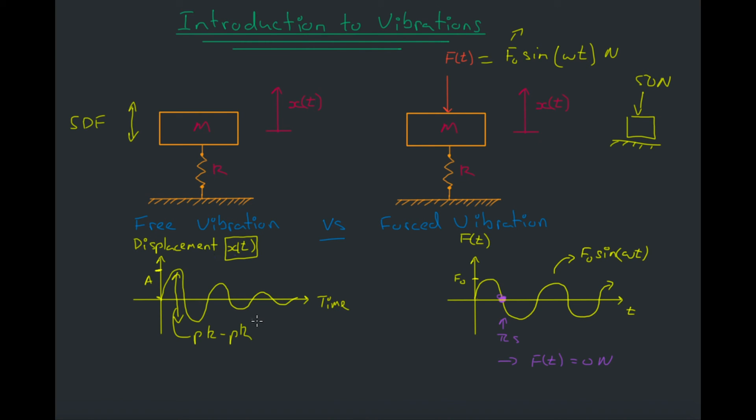Hopefully that helps answer some of the differences between free vibration and forced vibration. The key takeaways are: free vibration only occurs when there's no external forces acting on the system, and forced vibration is when there is an external force acting on the system. The key differences are that in free vibration, the mass will be allowed to go to rest, and in forced vibration, the mass will never be allowed to go to rest because there's always a force being applied to it.